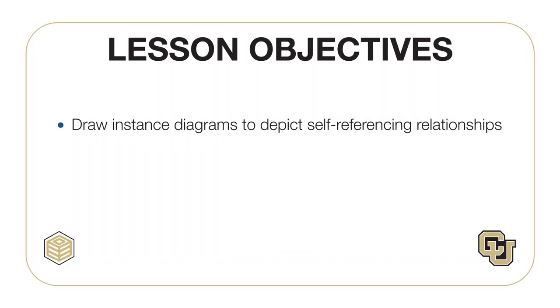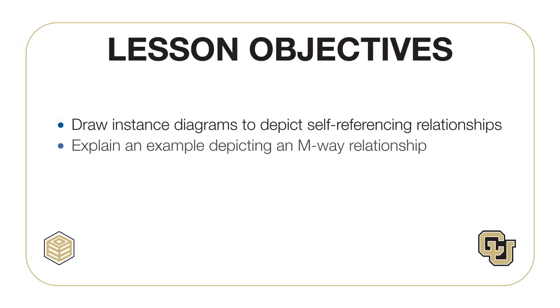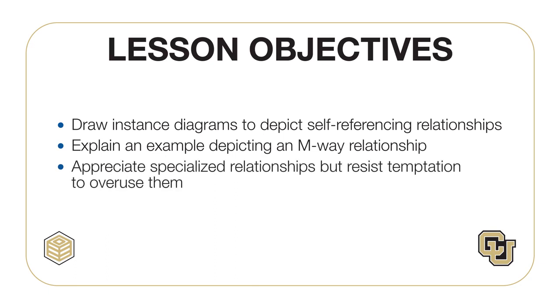Lesson 4 continues on the relationship variations theme that was started in Lesson 3. The relationship variations covered in Lesson 4 do not occur often in practice; however, when occurring, these variations are important parts of a data model. The objectives involve two specialized types of relationships: self-referencing relationships and M-way relationships. The most important objective is to appreciate specialized relationships but avoid temptation to overuse them, as typical novice mistakes in data modeling are to overuse specialized relationships.